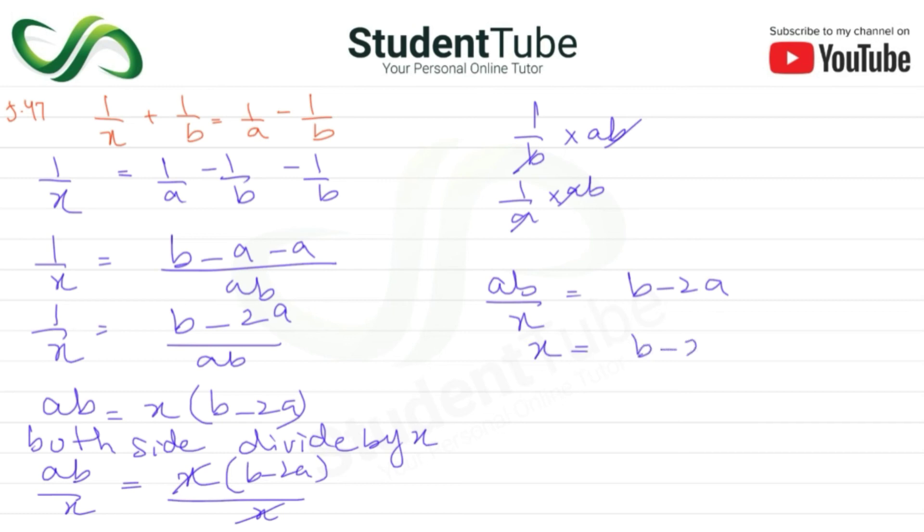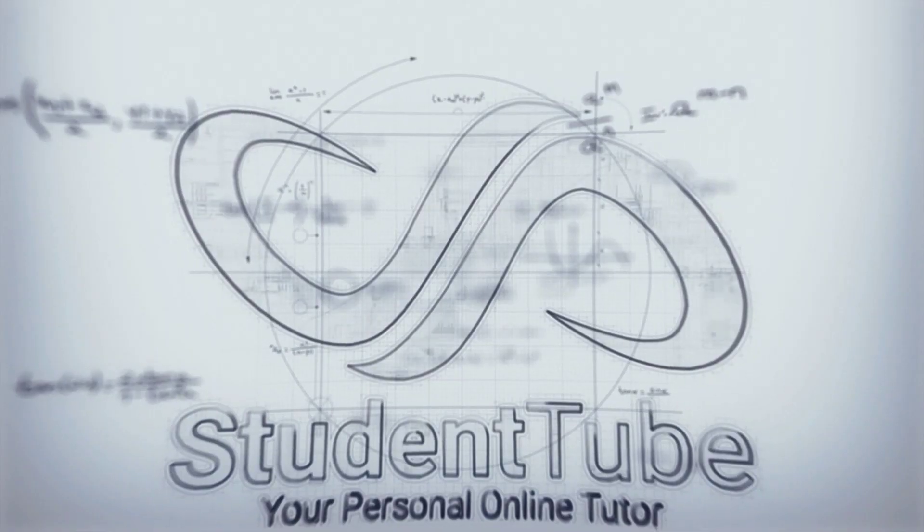So x = ab/(b - 2a). Answer. These were today's two questions. I hope you understood them well. For more exercises, please subscribe, and for more you can visit our website www.studenttube.info. Allah Hafiz.